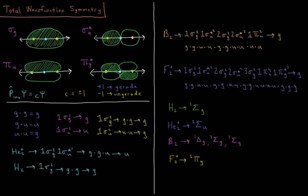This video will discuss total wave function symmetry of the term symbols of homonuclear diatomic molecules. In the last video we went through several examples for computing term symbols, but there's one part I left off. In addition to the multiplicity and lambda labels, there's another subscript for homonuclear diatomics — whether the entire term symbol is gerade or ungerade. This video will discuss how we determine whether a term symbol is g or u.